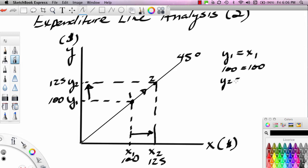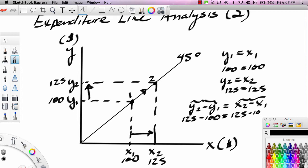So, yes, y2 equals x2, 125 equals 125, and we could say that y2 minus y1 equals x2 minus x1. And this is basically a measure of distance. The difference is a measure of distance, and this is a measure of distance. So, if we take 125 minus 100, that equals 125 minus 100. 25 equals 25. Again, we're just exploring the properties of a 45-degree line.